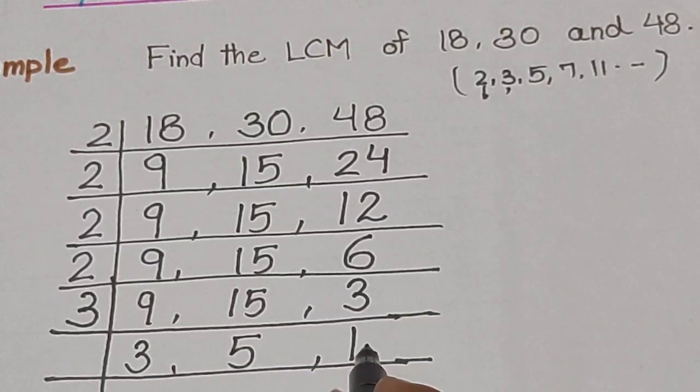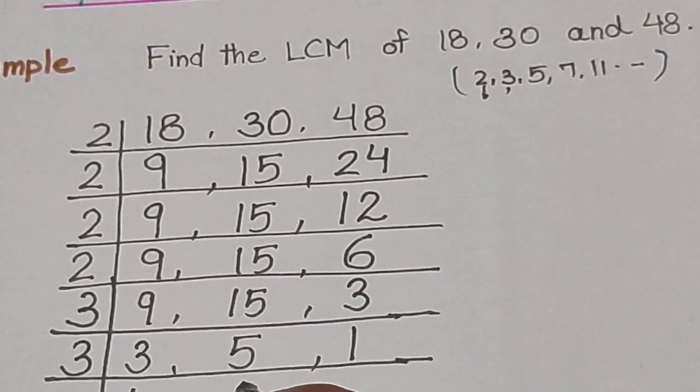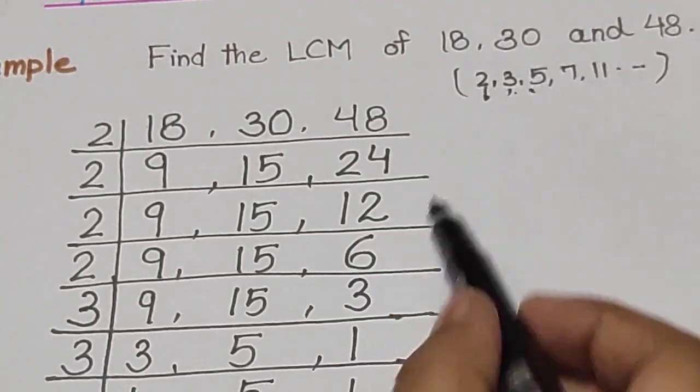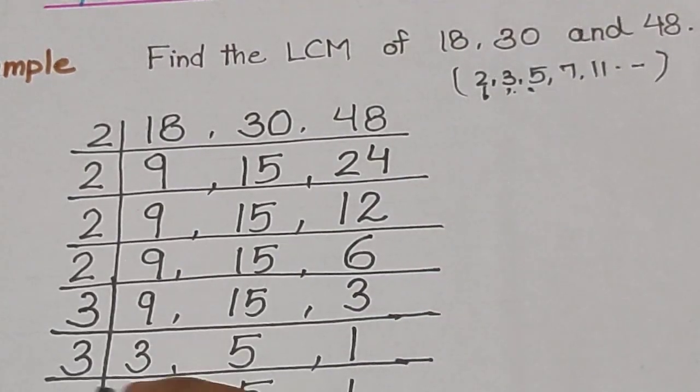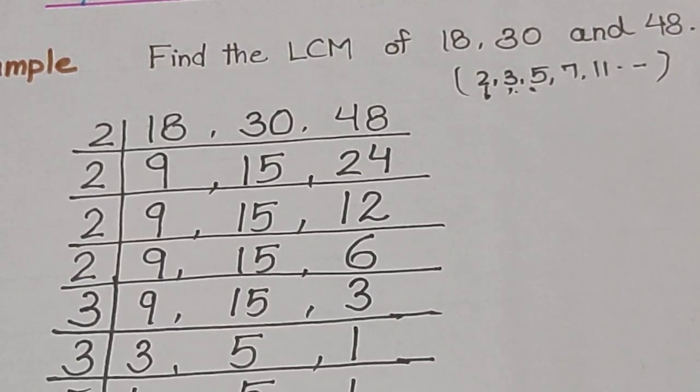Now, can you divide any number by 3? Yes, this number is divisible by 3. So, 3 times 1 is 3, 5 is there, and 1. Now, which number comes next? 5. So it will divide by 5. 5 times 1 is 5.